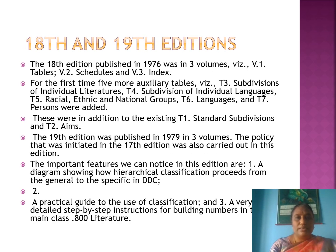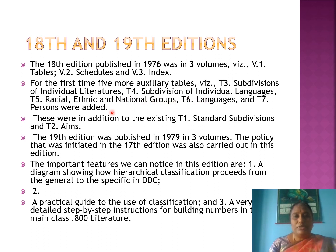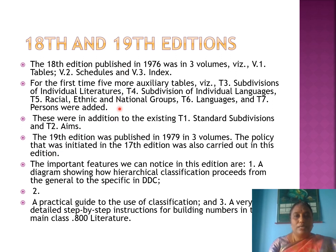The DDC 18th edition was published in 1976 in three volumes: volume one — tables, volume two — schedules, and volume three — index. For the first time, five auxiliary tables were added: Table 3 (subdivisions of individual literatures), Table 4 (subdivisions of individual languages), Table 5 (racial, ethnic, and national groups), Table 6 (languages), and Table 7 (persons).